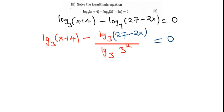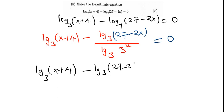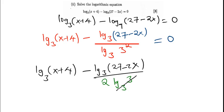So our next stage: log base three of (x plus four), minus log base three of (27 minus 2x), divided by — now we're going to have two times log base three of three. Since the base matches the number, log base three of three equals one, so this simplifies even further.